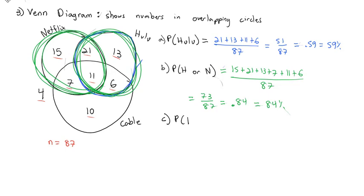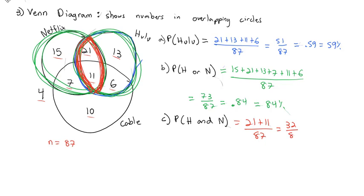What if we change it to an and — Hulu and Netflix? With and, we want both to occur, so we look for where the two circles overlap. The Hulu and Netflix circles overlap in the center area, where only the 21 and the 11 fall in both circles, giving 32 out of 87, or approximately 0.37, or 37%.